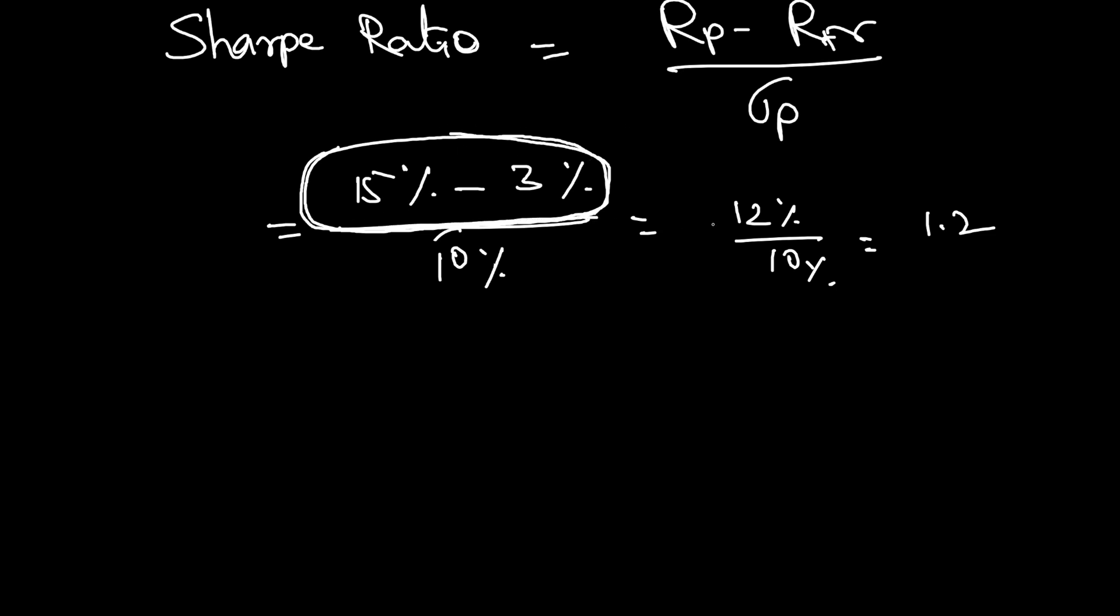You are getting 12 percent extra in comparison to the risk-free rate, for which you are taking the risk of 10 percent deviation. This 10 percent deviation represents risk. So you are taking 10 percent deviation risk for which you can get 12 percent extra.